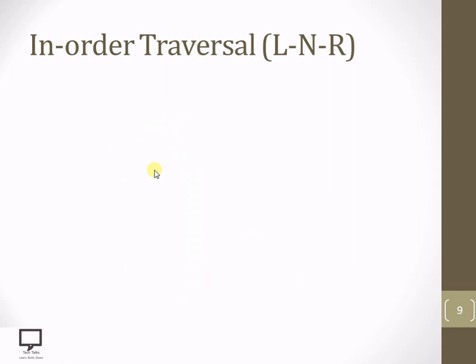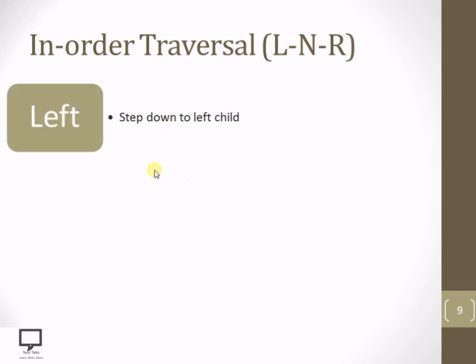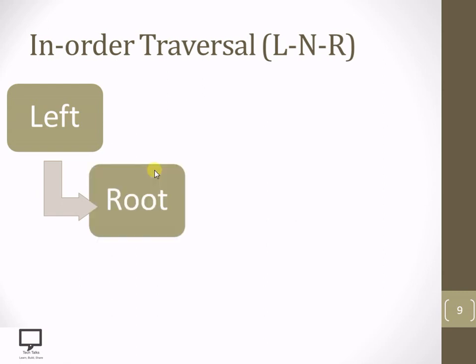If it is having a left child, then process that left child and so on. In detail, I am explaining the same concept. So let's start with left and step down to the left child if it is present. Now that left child is going to become the current root. Then for that current root, we need to again check whether it is having a left child.